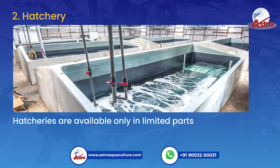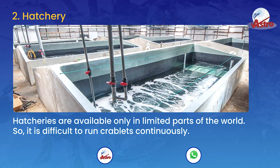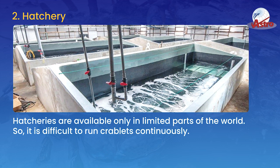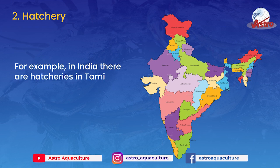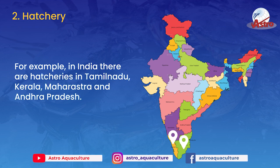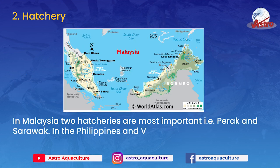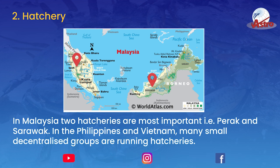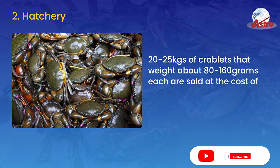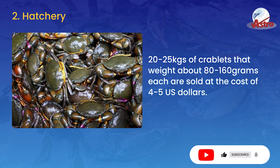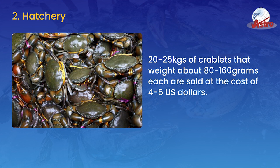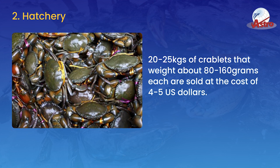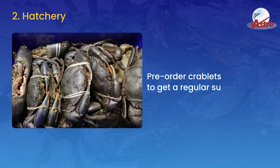Big crabs are available only in limited amounts — crabs above 500 grams are available in lesser quantity. Hatcheries are available only in limited parts of the world, making it difficult to run crablets continuously. In India, hatcheries exist in Tamil Nadu, Kerala, Maharashtra, and Andhra Pradesh. In Malaysia, two important hatcheries are in Perak and Sarawak. In the Philippines and Vietnam, many small decentralized groups run hatcheries. Crablets weighing 80 to 160 grams each are sold in batches of 20 to 25 kilograms at 4 to 5 US dollars. Pre-order crablets to get a regular supply.